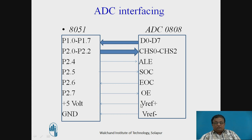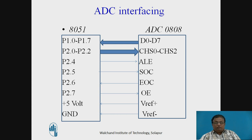V reference plus is connected to +5V and V reference minus is connected to ground, so the input voltage will vary from 0V to +5V. For a 0V input the digital output will be 00 hex, and for +5V the digital output will be FF hex.